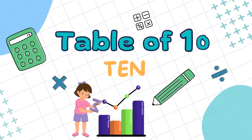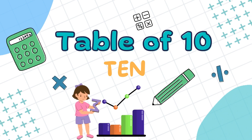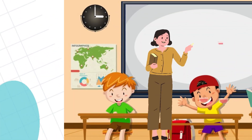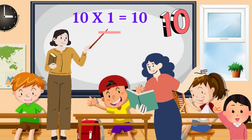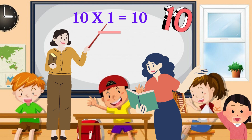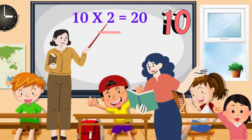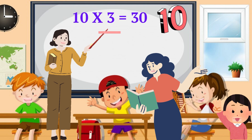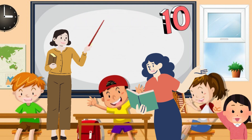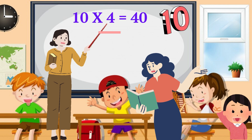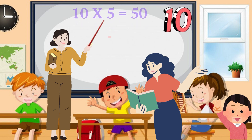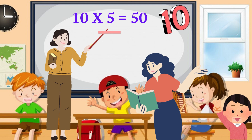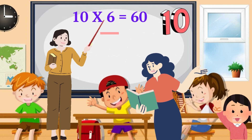Table of 10. 10 ones are 10, 10 twos are 20, 10 threes are 30, 10 fours are 40, 10 fives are 50, 10 sixes are 60.